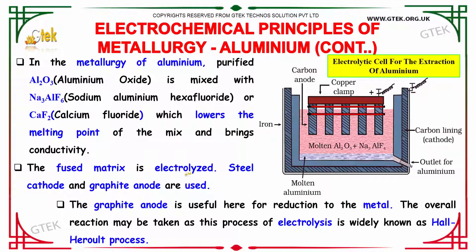The fused matrix is electrolyzed using a steel cathode and graphite anode. The graphite anode is useful here for reduction in the metallurgy of aluminium oxide. This process of electrolysis is widely known as the Hall-Héroult process.